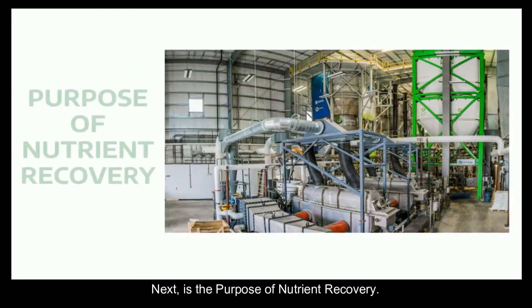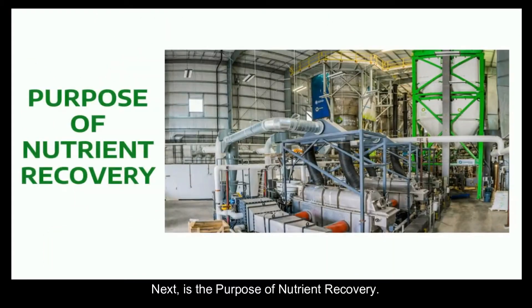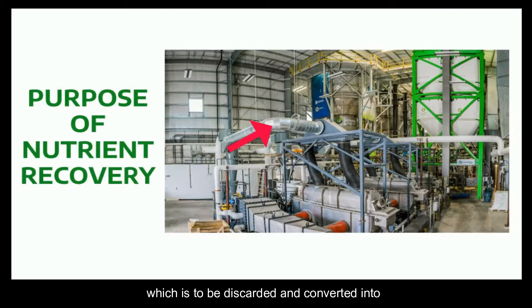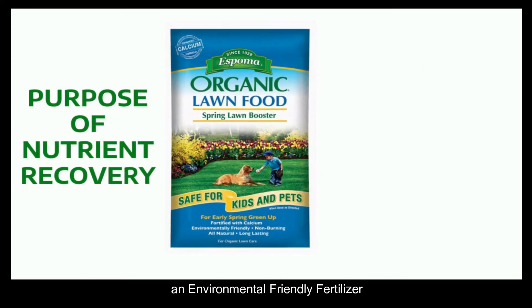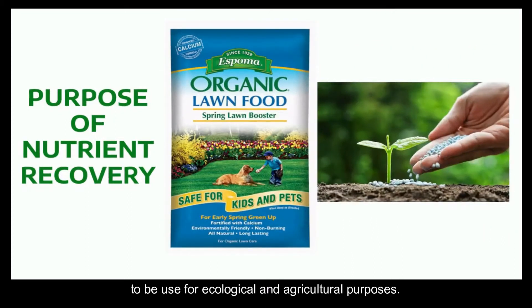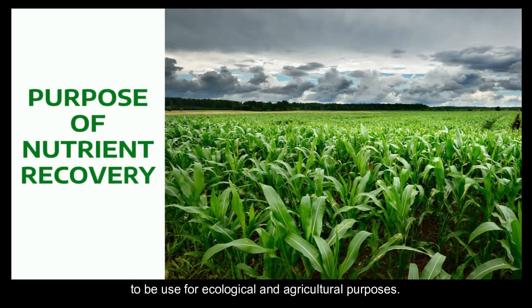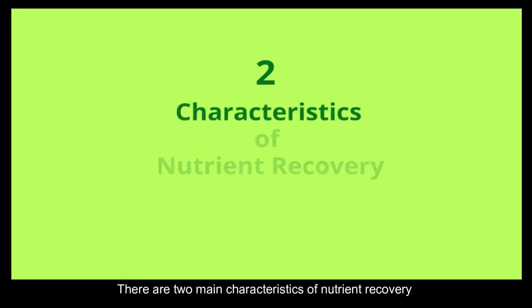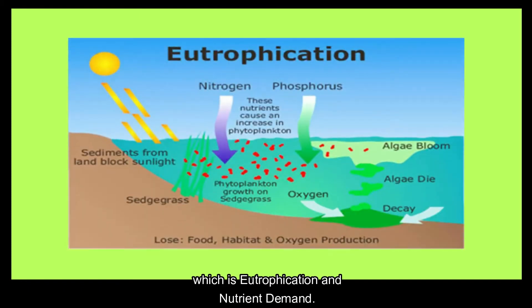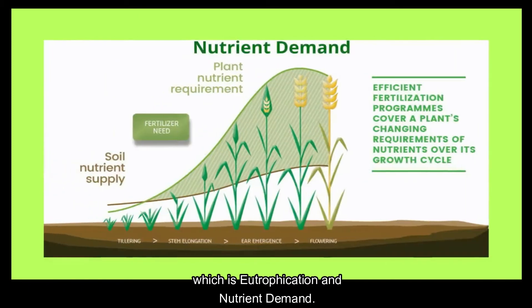Next is the purpose of nutrient recovery, which is to be discarded and converted into an environmental-friendly fertilizer to be used for ecological and agricultural purposes. There are two main characteristics of nutrient recovery, which are eutrophication and nutrient demand.